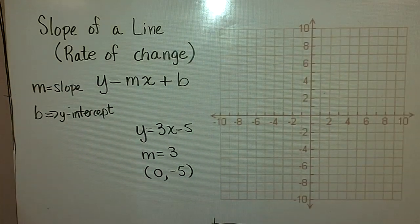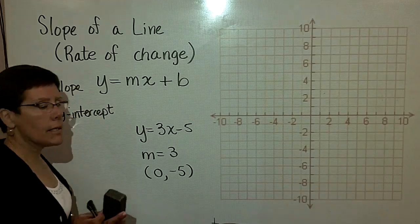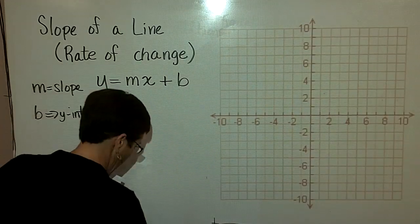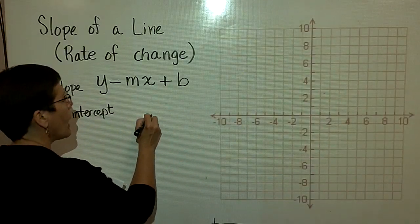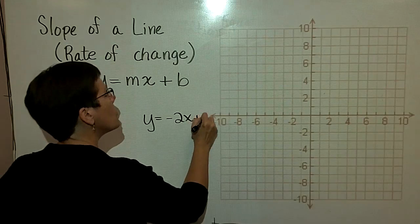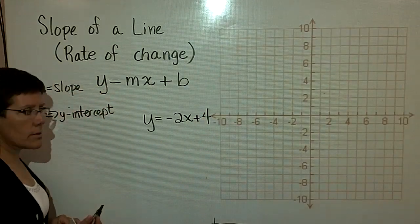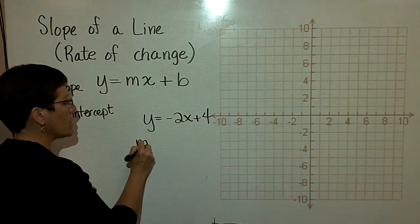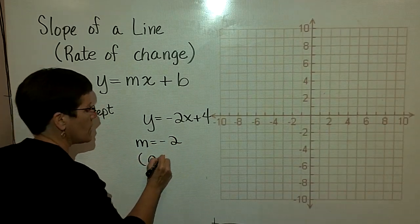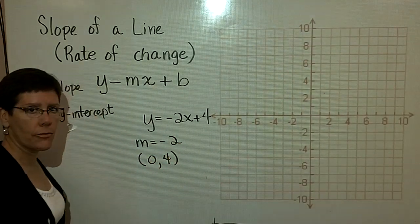I'll graph that using slope-intercept form in a minute. But for right now, I'm going to stop at that point. Here's another one. If y was equal to -2x + 4. And I asked you what is the slope of this line. You would tell me that the slope is a negative 2. And you would tell me that the y-intercept is (0,4).